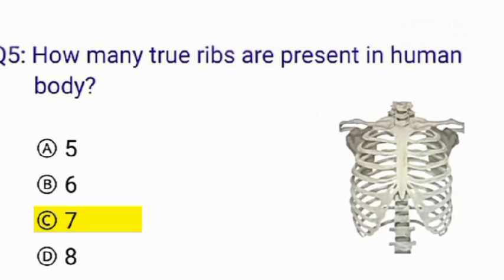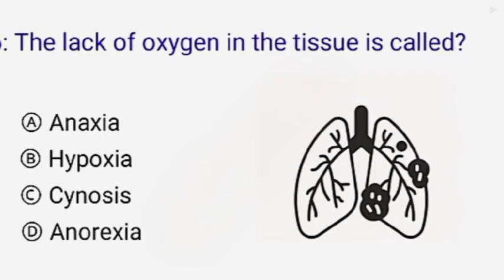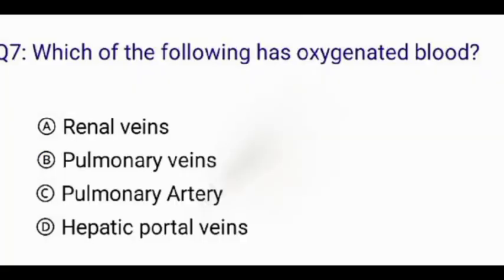How many true ribs are present in the human body? The correct answer is option C: 7. The lack of oxygen in the tissue is called — the correct answer is option B: hypoxia.